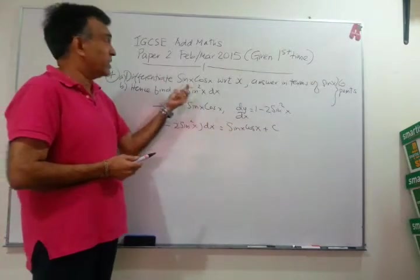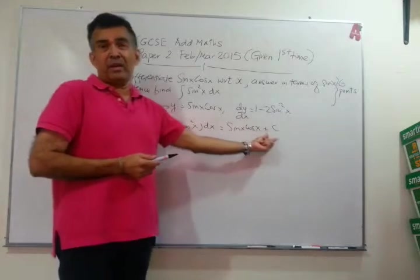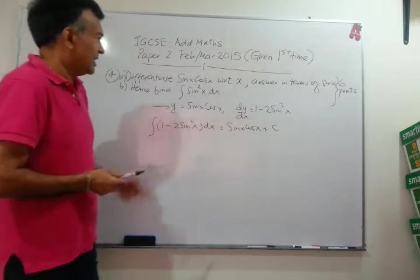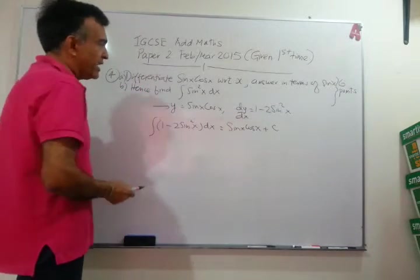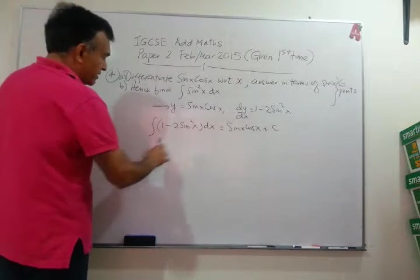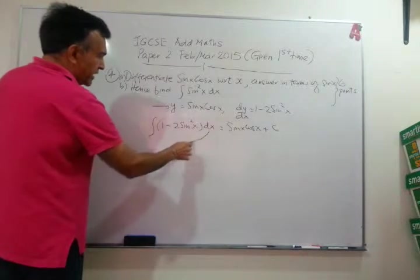When you integrate 1 minus 2 sine squared x, you must get sine x cos x plus x. Remember, this is indefinite integration. There are no limits. So, you must have a plus c. Now, we need to clean this up. We can write this integral as, bring the dx inside here.